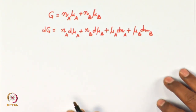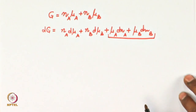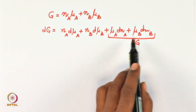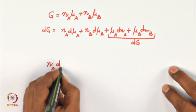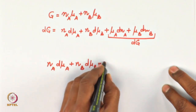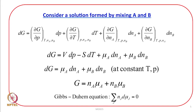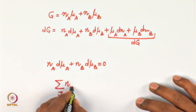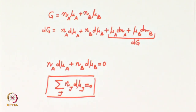Taking the differential of G = μ_A N_A + μ_B N_B gives dG = N_A dμ_A + N_B dμ_B + μ_A dN_A + μ_B dN_B. Since dG at constant T and P equals μ_A dN_A + μ_B dN_B, it follows that N_A dμ_A + N_B dμ_B = 0, or in general form: Σ_j N_j dμ_j = 0.